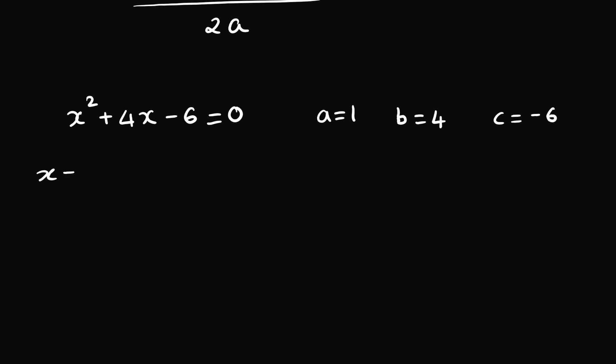The quadratic formula is x equals minus b. So, what's your b? It's 4. So, minus 4 plus or minus square root of b square minus 4ac. Your b is 4, so it's 4 square minus 2 into a into c. a is 1 and c is minus 6. And the whole thing divided by 2a. So, 2 into a is 2 into 1.